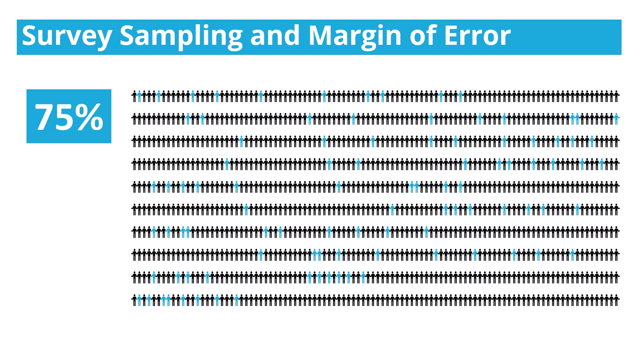Going by that margin of error calculator, let's round up a little bit and say 10%. So the survey margin of error would give me a range between 65% and 85%. The actual value I would receive is probably within that range somewhere — that 20% range.